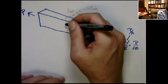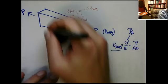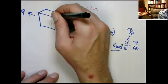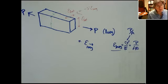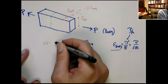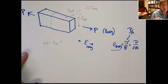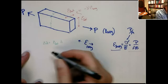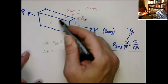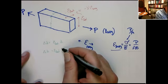The actual change in dimension — for example, we would call this dimension initially A and this dimension B. Those dimensions will change by different amounts because the initial lengths are different. If you wanted to figure out the change in the A dimension, delta A, that's just going to be the lateral strain times the original length A. And in the other direction, delta B is that same lateral strain multiplied by the original dimension B.